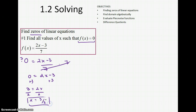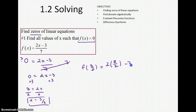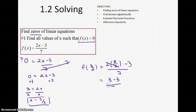We can check by plugging in x = 3/2: we find f(3/2) and verify we get 0 out. Plugging into the original equation, the 2s cancel, giving (3 − 3) / 7 = 0. We did in fact get 0 out, so we found the zero.